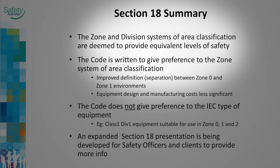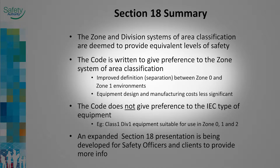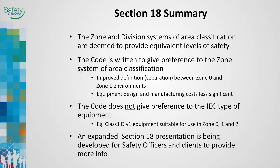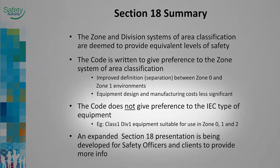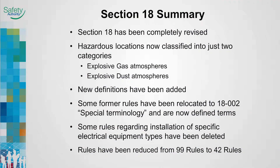It has been determined that the Zone and Division Systems of Area Classification in Section 18 provide equivalent levels of safety. Preference is given to the Zone System of Area Classification. The Code does not give preference to the IEC type of equipment. Section 18 has been completely revised.